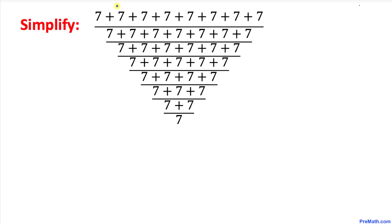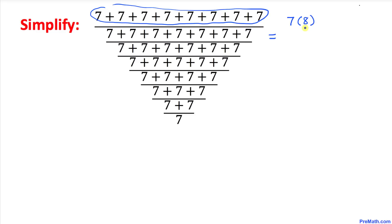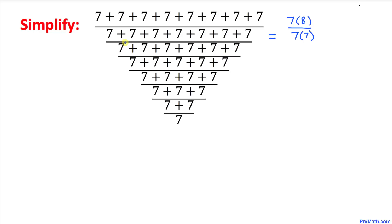Let's focus on the very topmost fraction. We have sevens being added eight times, so I can write this as seven times eight. Likewise, when we add the ones on this next fraction, since there are seven of them, I can write seven times seven.